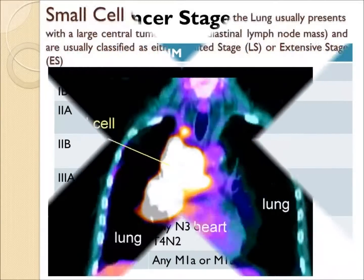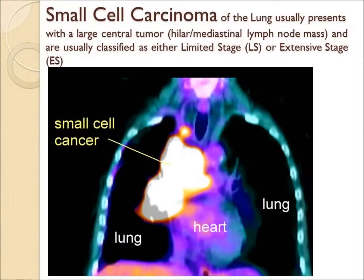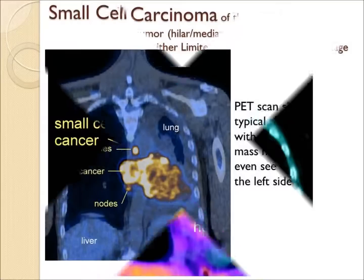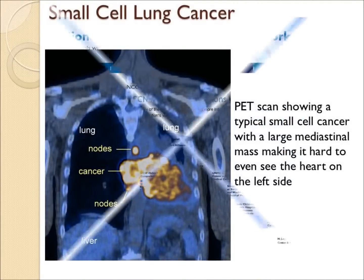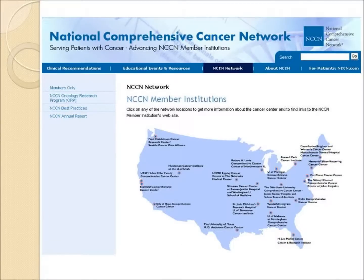Small cell cancer of the lung is almost never stage 1 or 2 — it is usually a large mediastinal mass in the chest. Small cell is commonly divided into either limited stage, limited to the chest, or extensive stage if there is evidence of metastases.